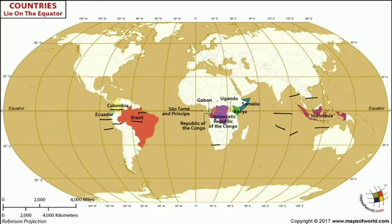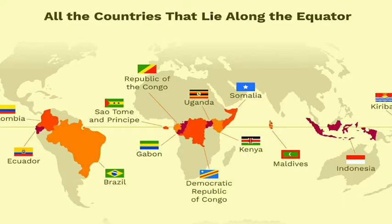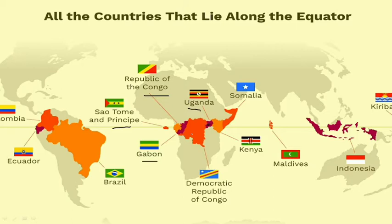Moving on to the African countries, starting from São Tomé and Príncipe — an island — then the Republic of Congo, Democratic Republic of Congo, Gabon, Uganda, Kenya, and Somalia. These are the countries located in Africa that are passed by the equator.